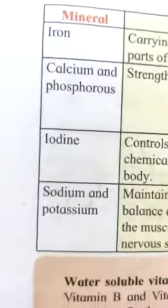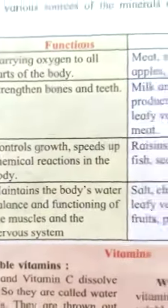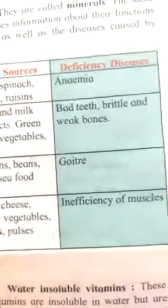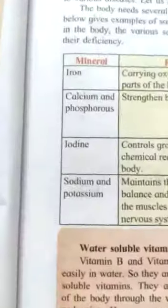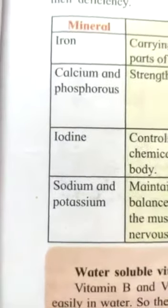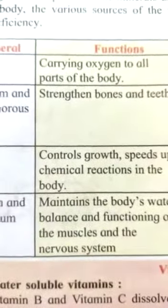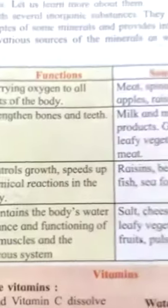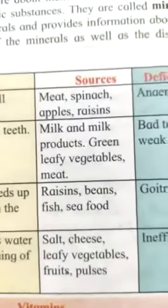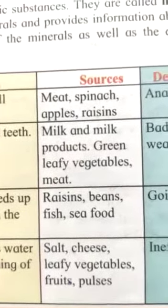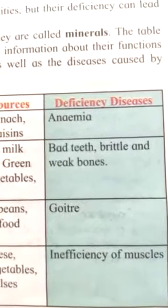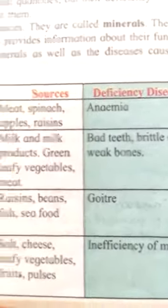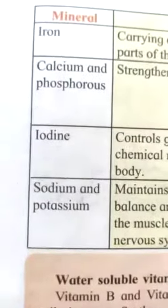Minerals and vitamins — here are their functions, sources and deficiency diseases. Deficiency means what disease we can get if we don't get that mineral. First mineral is iron. Its function is carrying oxygen to all parts of the body. It is found in meat, spinach, apples and raisins. Deficiency disease: anemia. Lack of iron causes anemia.